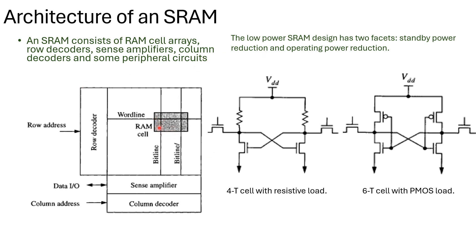If you take each cell, the SRAM cell consists of 4-transistor cells with a resistive load. Initially, the SRAM 1-bit cell is constructed with 4 transistors with a resistive load. The resistive load leads to more power dissipation, which can be reduced by replacing the resistive load with a PMOS load, since PMOS transistors will reduce power compared to a resistor.